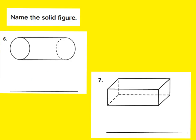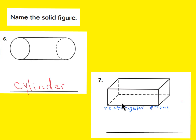For number six, you should have said it's a cylinder because it has two congruent circle bases and one curved surface. For number seven, it's a rectangular prism because it has two congruent bases that are rectangles, and all the faces on the sides are rectangles.